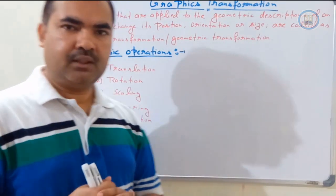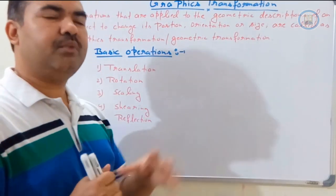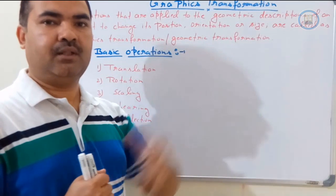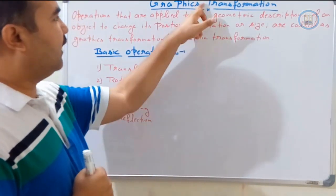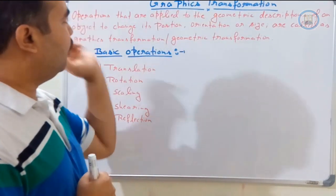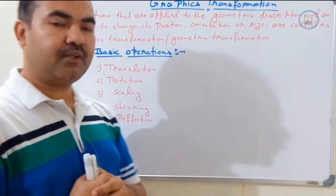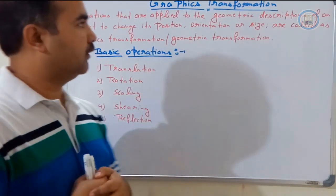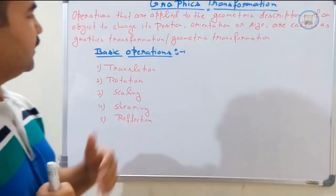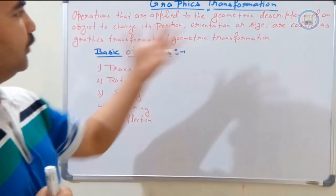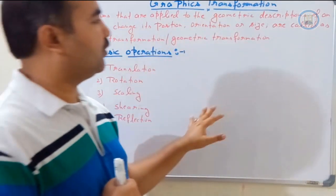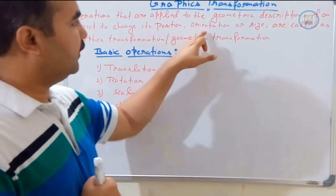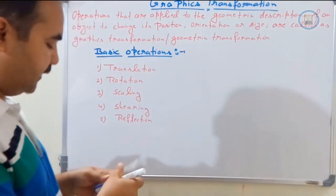What is transformation? Transformation means we are going to change something. In this, we have a mathematical operation that we are going to apply on the geometry of any object — or you can say, on the geometric description of the object — to change its position, orientation, and size.